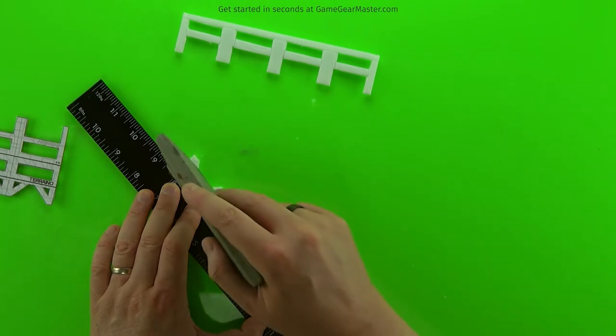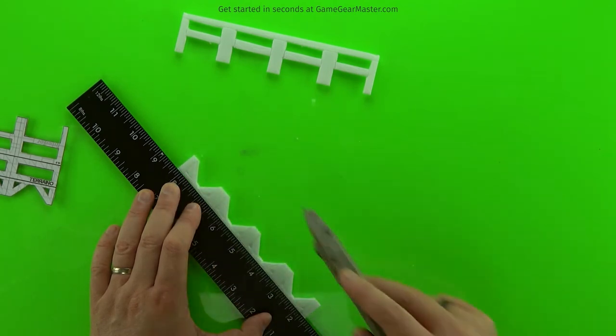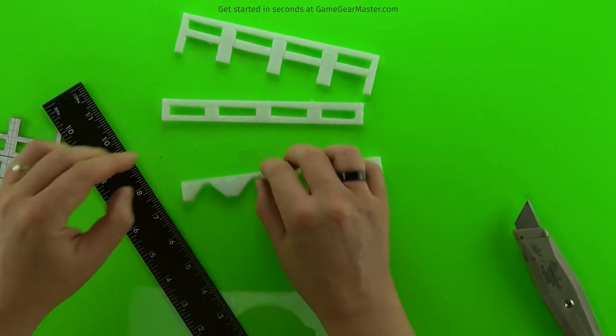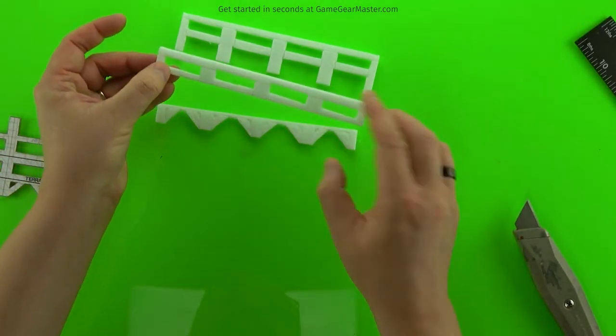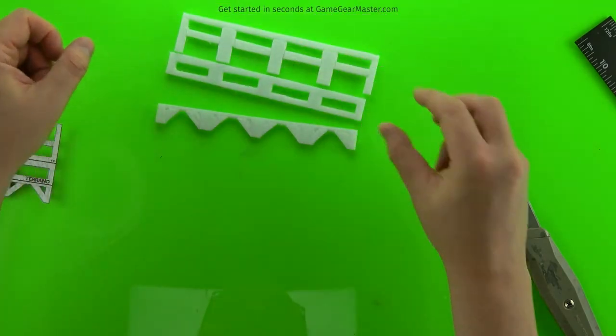Once you have your three components, we're going to use our work surface again to line up the piece of cardboard that we're going to glue to these three components. And just remember to turn them over so the textures are in the right direction.